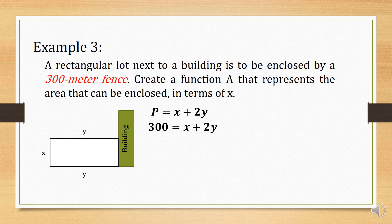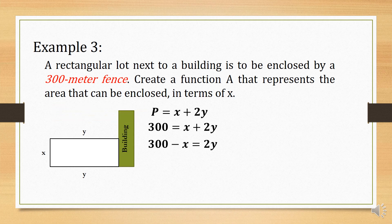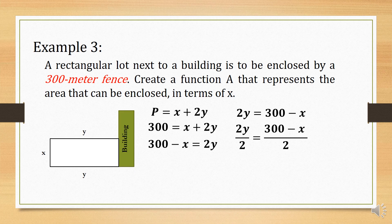This equation involves two variables, x and y. We need to rewrite this equation in terms of x. Transposing x to the other side gives us 300 minus x is equal to 2y. By the commutative property, we have 2y is equal to 300 minus x. Dividing both sides by 2, we get y is equal to 300 minus x all over 2. This is now the value of y.